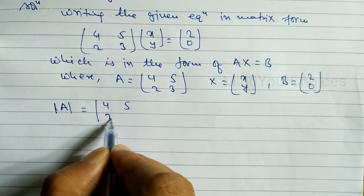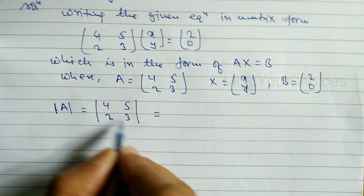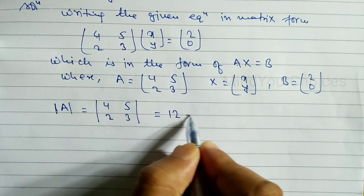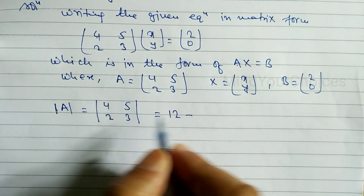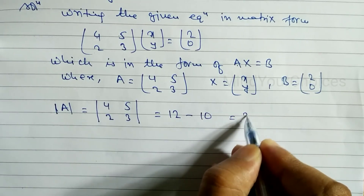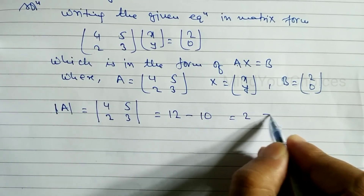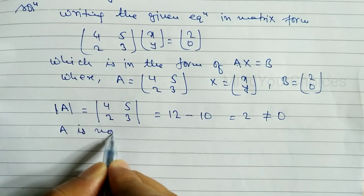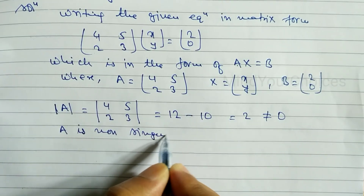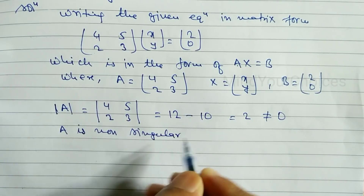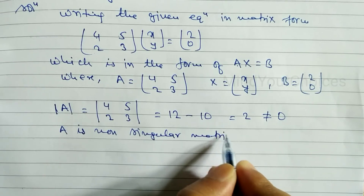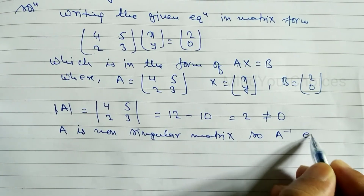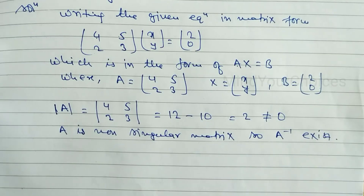To find the determinant of A = [[4, 5], [2, 3]]: multiply the main diagonal, 4 times 3 = 12, then subtract the product of the non-diagonal, 2 times 5 = 10. So the determinant = 12 − 10 = 2, which is not equal to zero. Therefore A is a non-singular matrix, and A inverse exists.